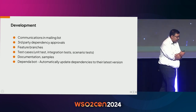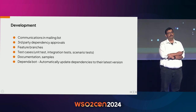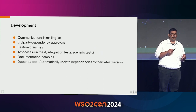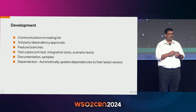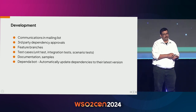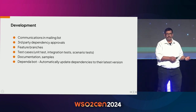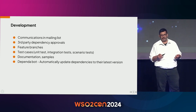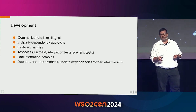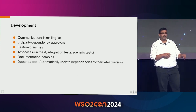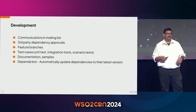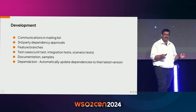We have a specific process for bringing in third-party dependencies. First, whether the license is compatible with the Apache 2 license — for example, GPL-licensed dependencies are not allowed. Second, whether the third-party dependency is an actively developed project and who the owners are. Third, we review what vulnerabilities have been reported against those dependencies. Fourth, whether we already have an existing dependency with similar functionality — in that case, we reuse existing dependencies rather than adding a new one.